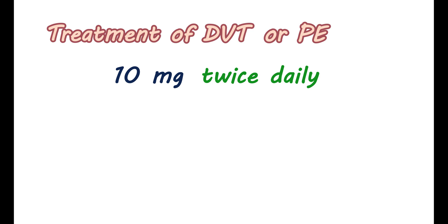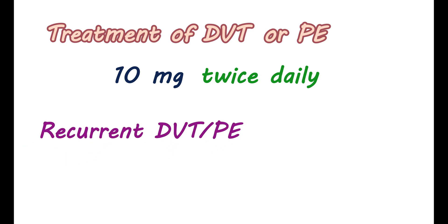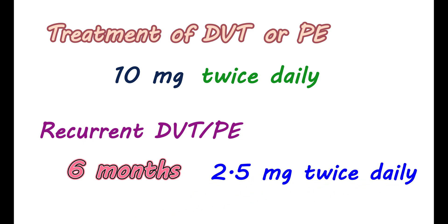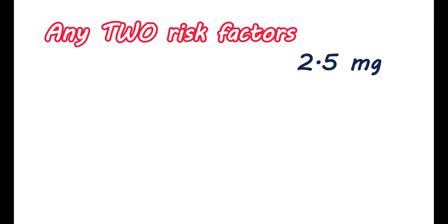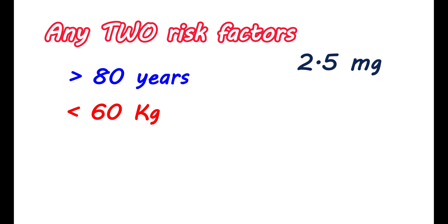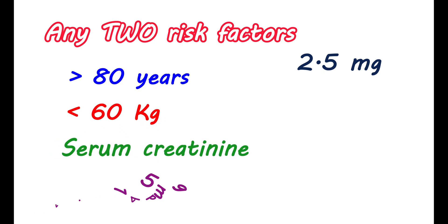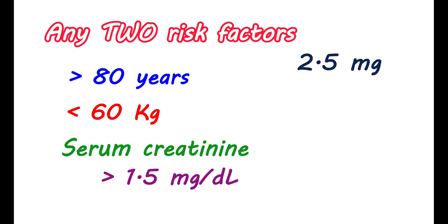In some people, to reduce the risk of recurrent DVT and pulmonary embolism for the initial 6 months, apixaban can be given at 2.5 mg twice daily. People meeting any two risk factors — being greater than 80 years old, weighing less than 60 kg, or having renal impairment with serum creatinine greater than or equal to 1.5 mg per deciliter — may have their dose reduced to 2.5 mg.